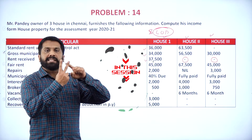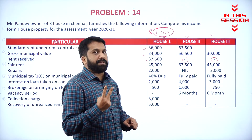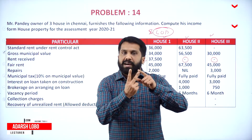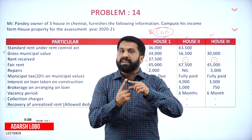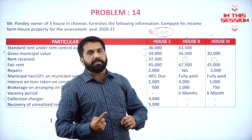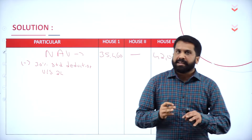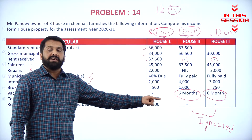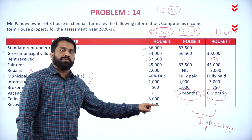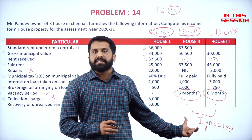If there are two houses that are self-occupied, income tax gives permission for any one house to be considered as self-occupied, and the second house will compulsorily be considered as let out. Under Section 24, we calculate 30 percent. In case of self-occupied and deemed let out, they will not get the benefit of vacancy period.